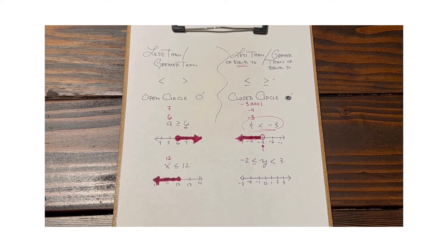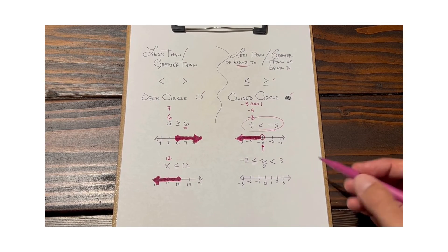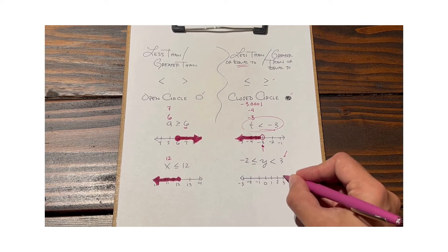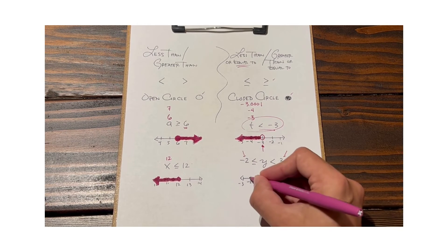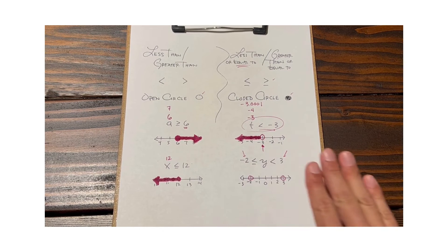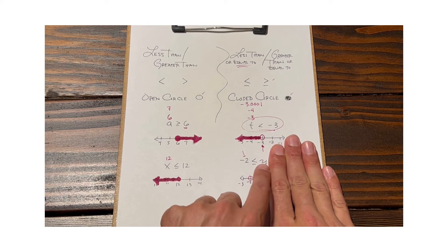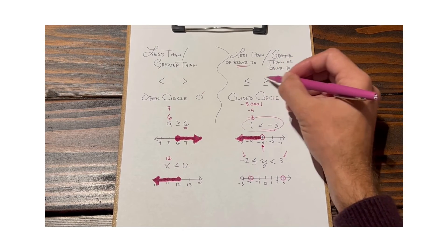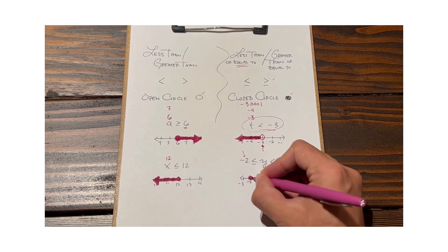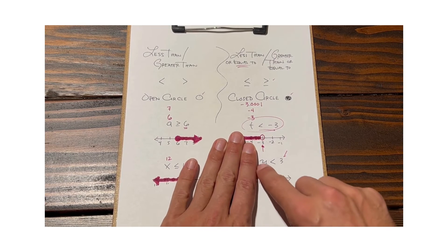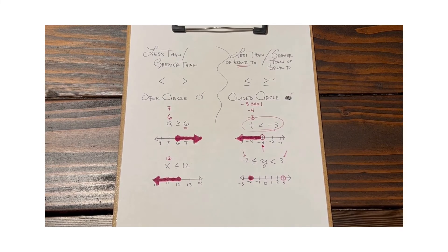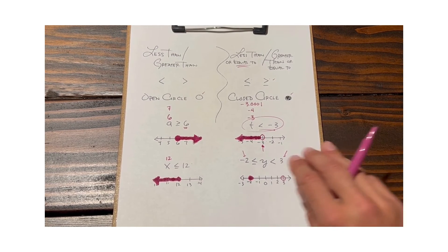This next one is slightly tricky — you really want to take it in pieces. We now have two critical values: something happening at three and something happening at negative two. You can cover up one part and just say this part says y ≥ -2 — clearly a closed circle case. Then cover the other and say we also need all values less than three — that's going to be an open circle.